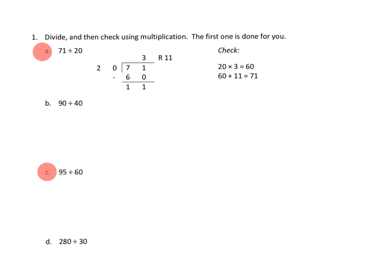So 60 plus the remainder of 11 is 71. And sure enough, you end up with 71, our whole that we originally started with.